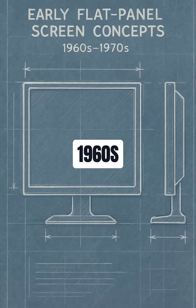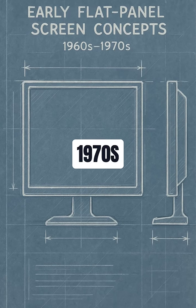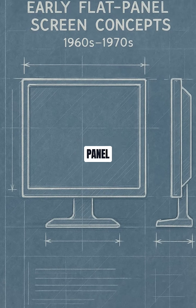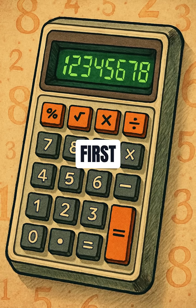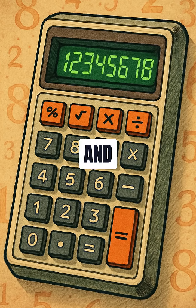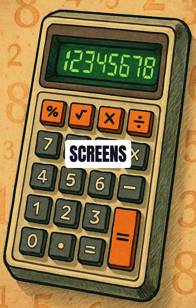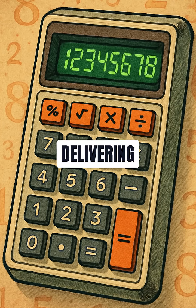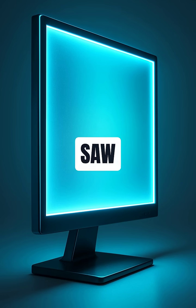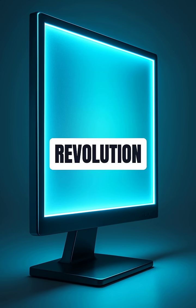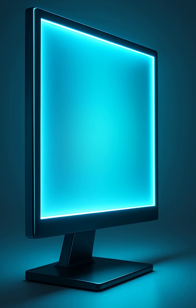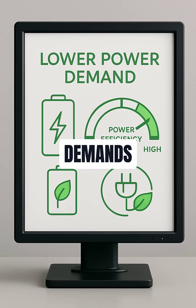The 1960s and 1970s sparked flat panel ideas. LCDs, first used in calculators, and plasma screens delivering deep blacks emerged. The 1990s then saw the LCD revolution with sharper images and lower power demands.